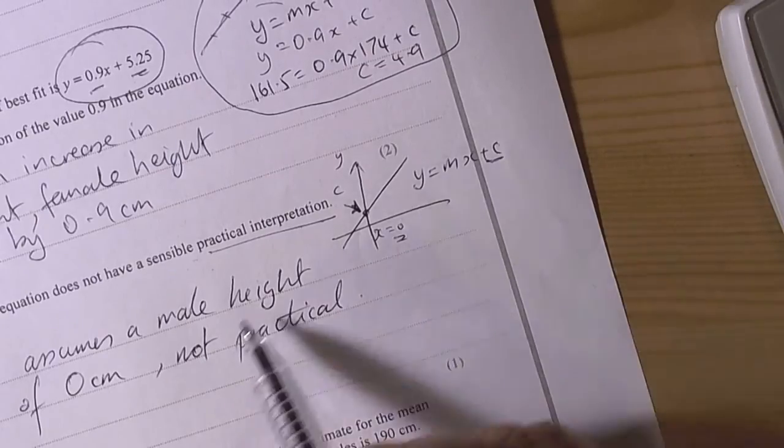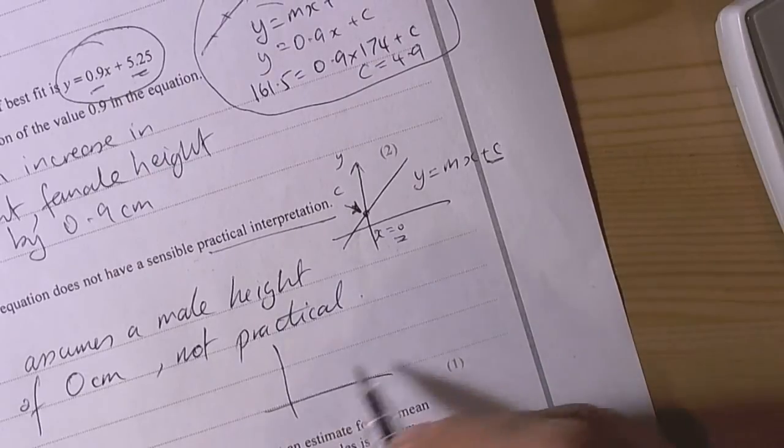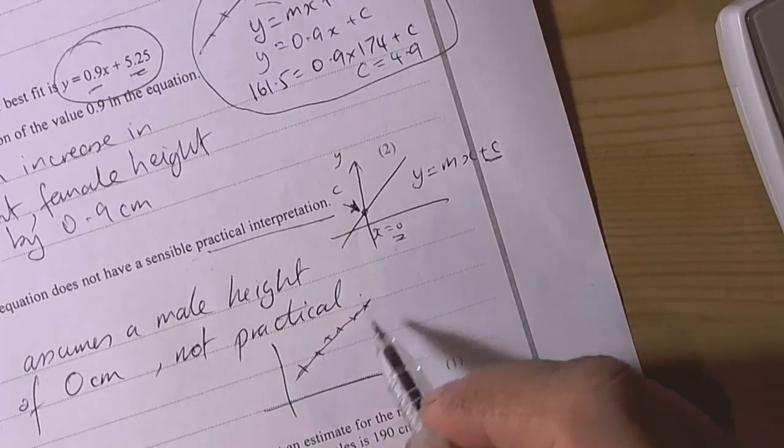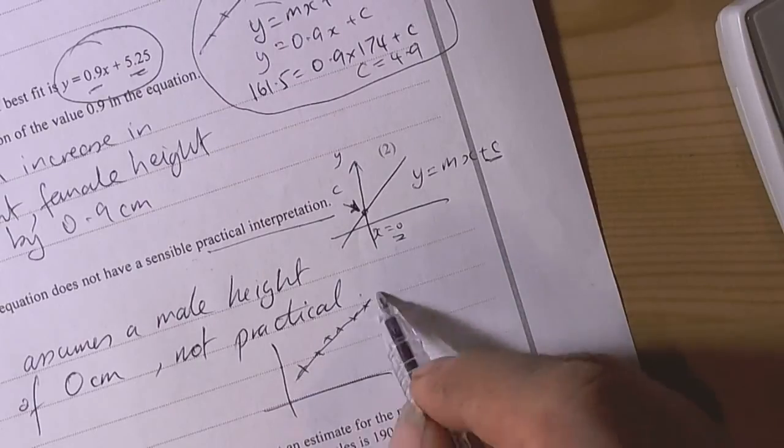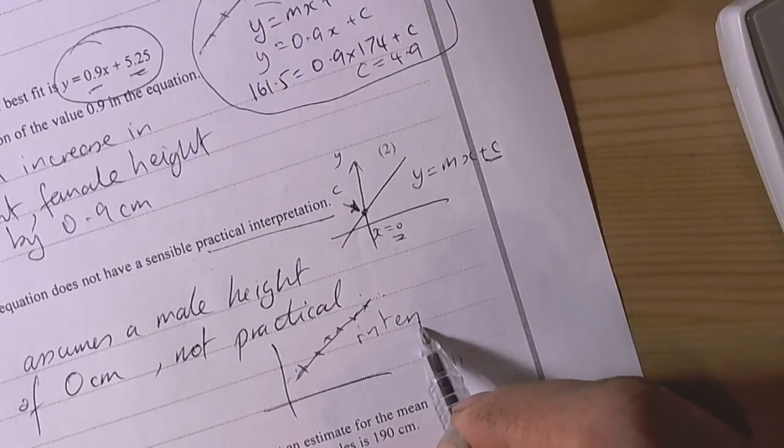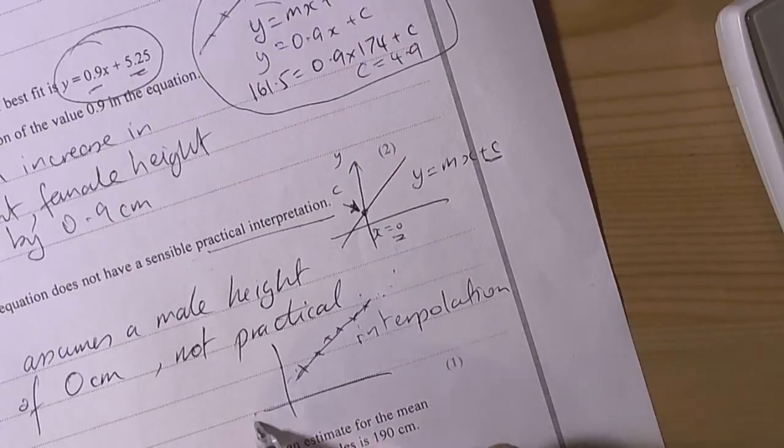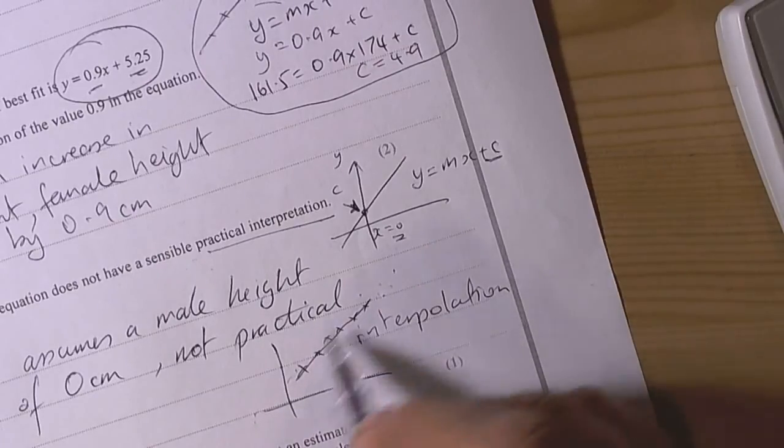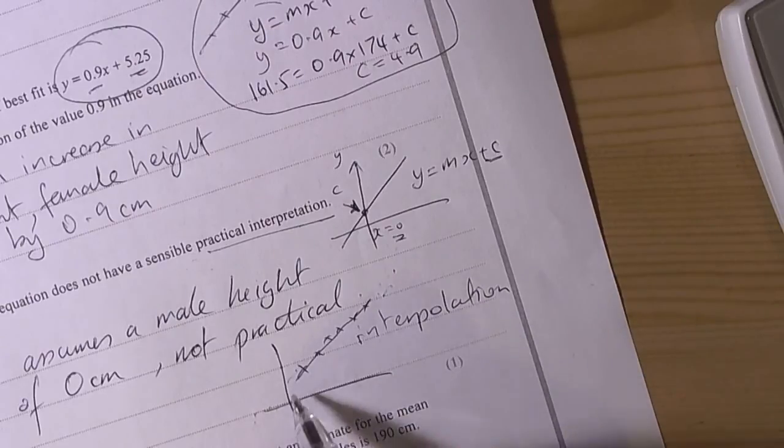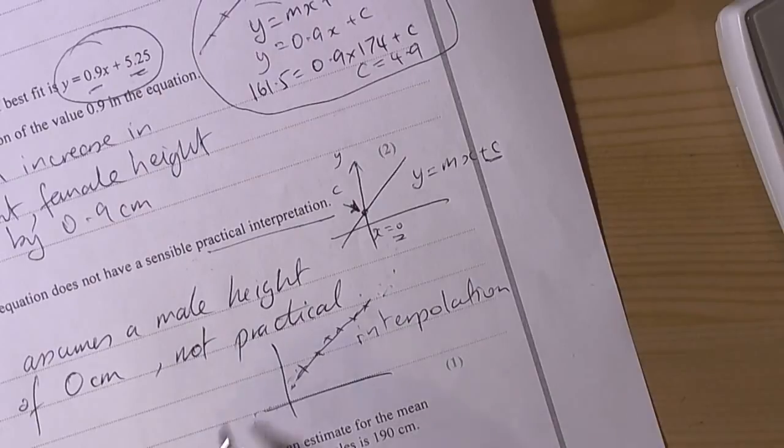This is really just confirming in our minds that with scatter graphs you have to be careful. When you've got a scatter graph, you really should be interpreting the data between the known extremes, and that's called interpolation. When you're extrapolating, going beyond your data that's been calculated or found from an experiment, then you're not always sure that it's reliable, particularly when you get down to the lower end on heights because we can't have a 0 height.